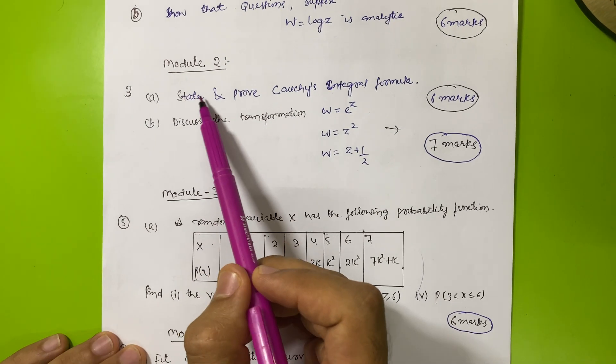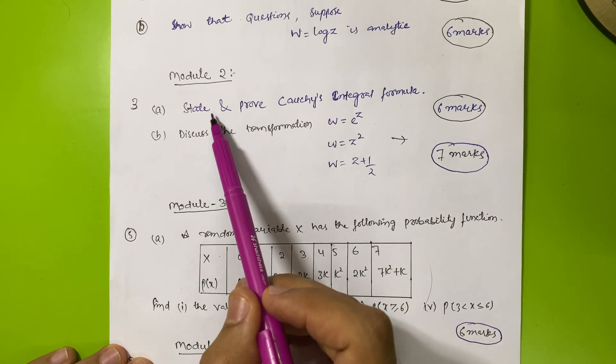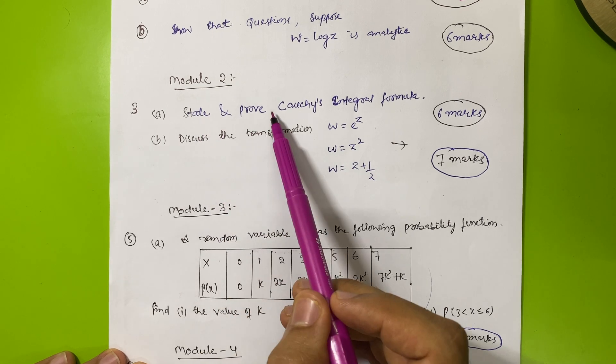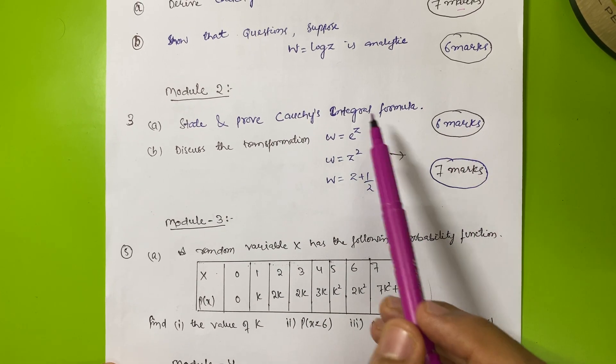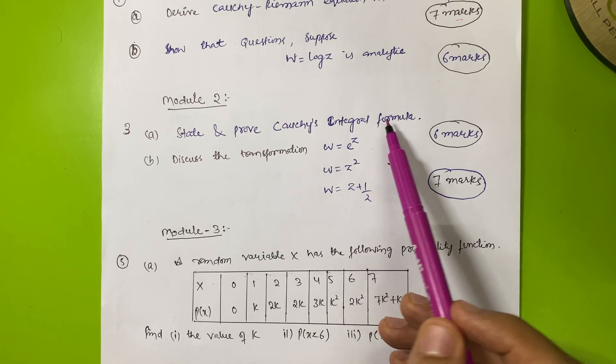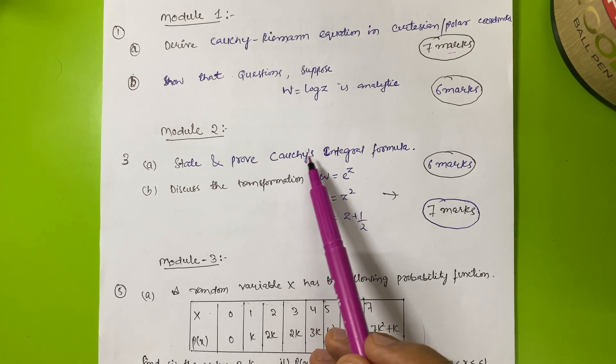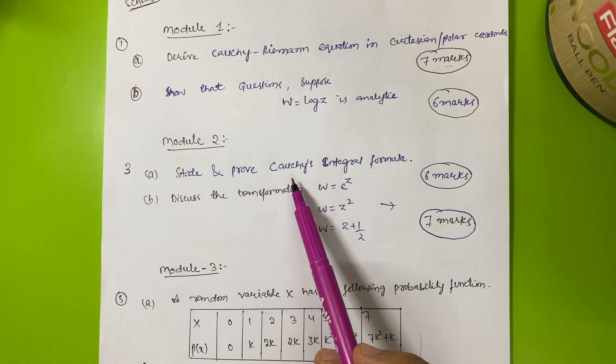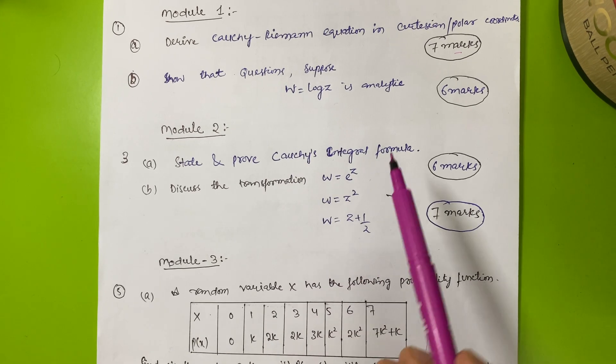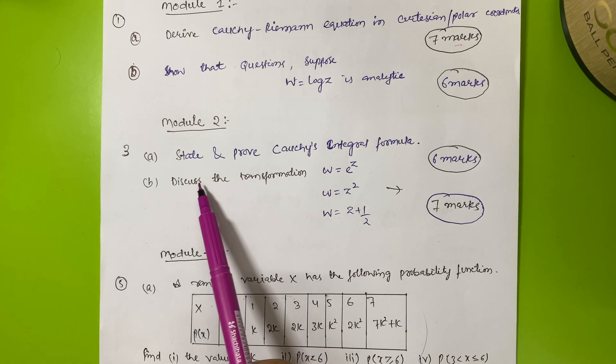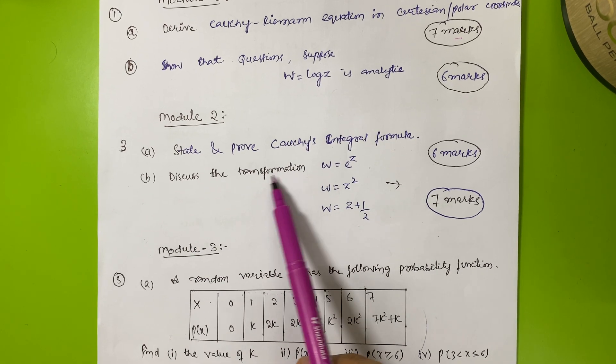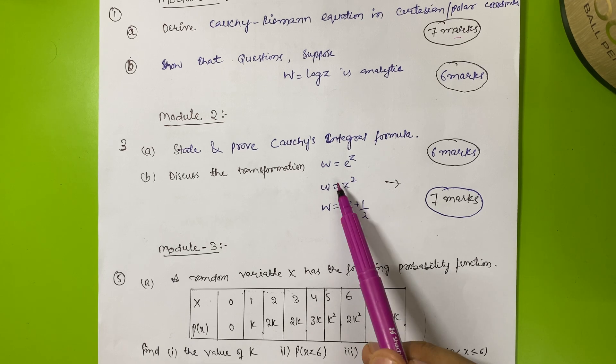There is one question which is definite from this module: state and prove Cauchy's integral formula. This also carries six marks. This is one of the most important questions in module two. They will ask you definitely this question. You can refer your previous papers also, you may see this question there.